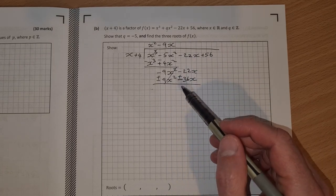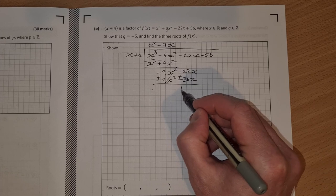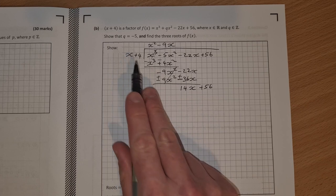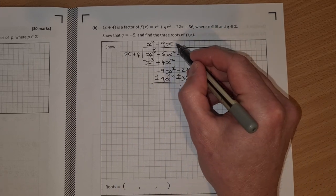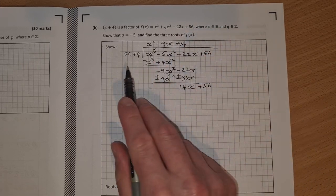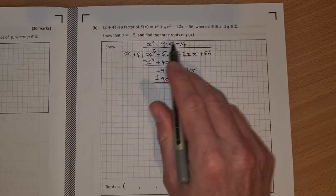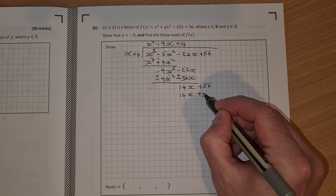36x minus 22x is 14x and bring down the 56, so plus 56. x into 14x goes plus 14 times. Multiply down.